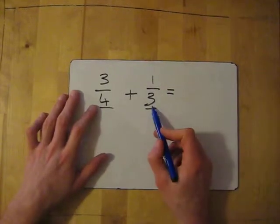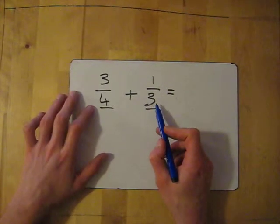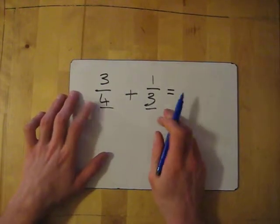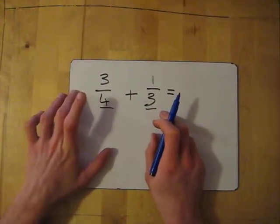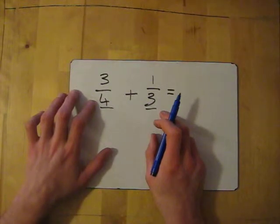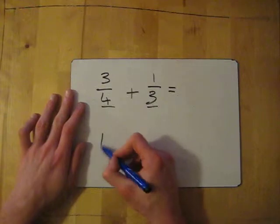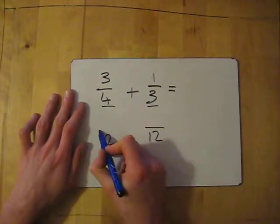So, 4 is in the 3 times tables. 8? Yeah. No, no, it's not actually. 12? Ah, yes, we've got a match. 12 is in the 4 times tables. And 12 is in the 3 times tables. So we'll write down our 12 below.